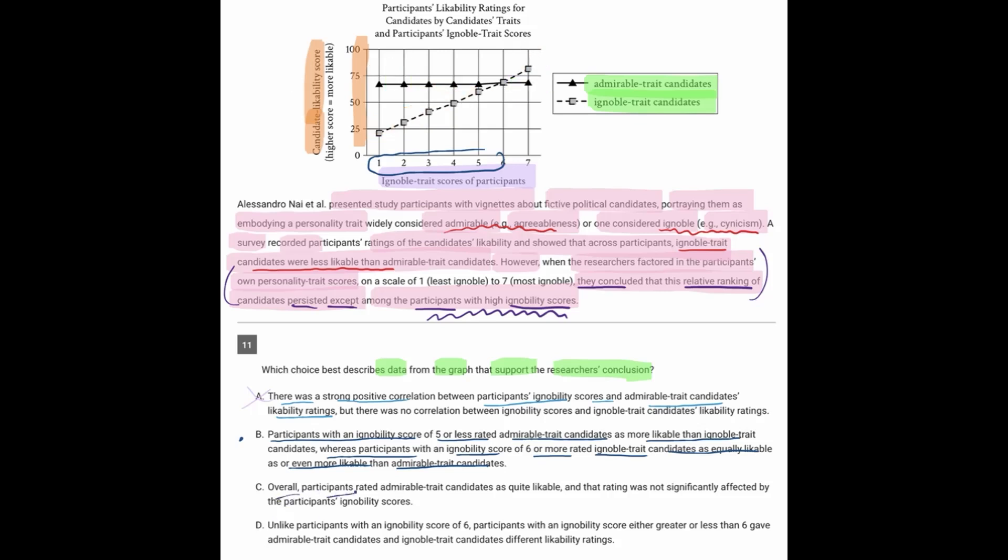C says, overall, participants rated admirable trait candidates as quite likable. And that rating was not significantly affected by the ignoability scores. Well, that is definitely true because all throughout here, the admirable candidates are just quite likable. They're at around 70% or so. But the problem with that one is it doesn't go with the main idea. It doesn't go with the conclusion because we're hearing that the relative ranking persisted except among the high ignoability. So we're looking for something that changes when you get to high ignoability. And C doesn't address that at all.